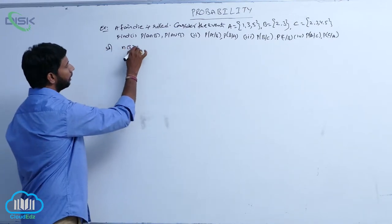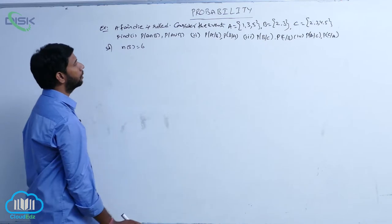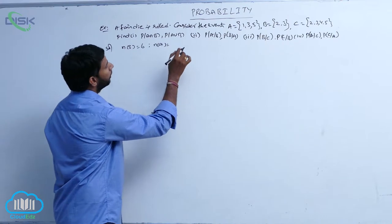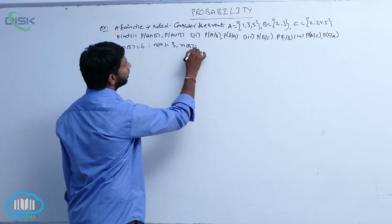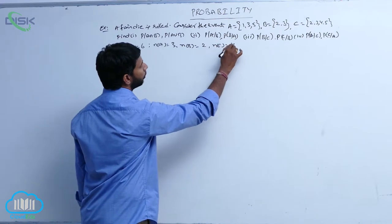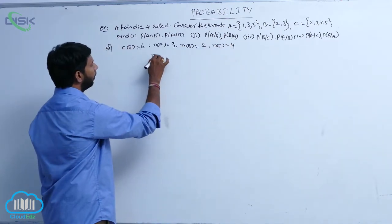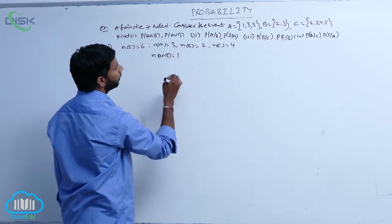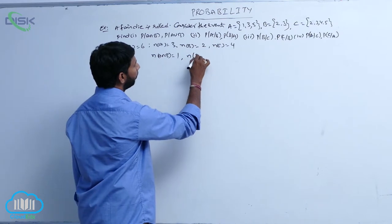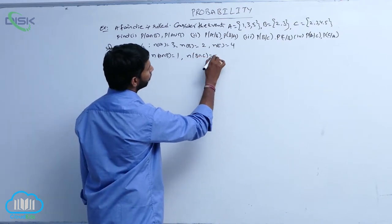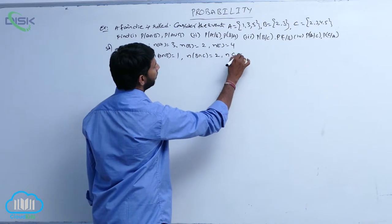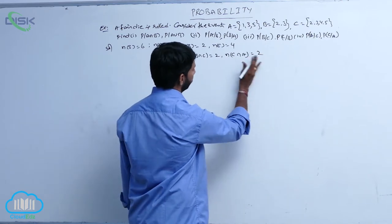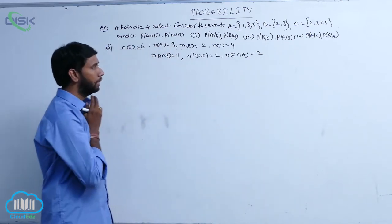Since a die is rolled, N(S) equals 6. N(A) equals 3, N(B) equals 2, N(C) equals 4. N(A intersection B) equals 1, N(B intersection C) equals 2, and N(C intersection A) equals 2.